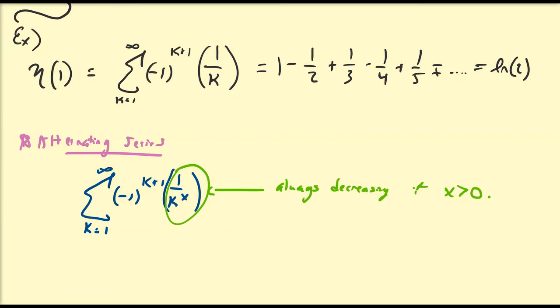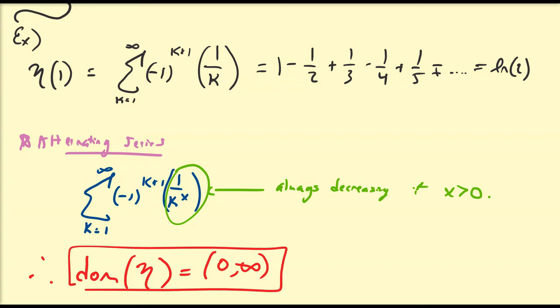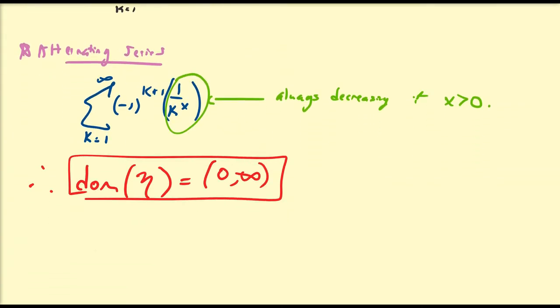Therefore, the domain of the Dirichlet eta function is the interval 0 to infinity. You can discuss values like at 0, or negative 1, or negative 2, using other summation methods, but we're not going to cover those special considerations here.